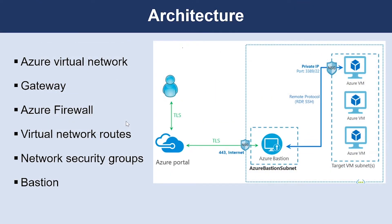Now let us look into the architecture. The architecture consists of the following components. An on-premises network is a private local area network implemented in an organization. An Azure virtual network hosts the application and other resources running in Azure. The gateway provides connectivity between the routers in the on-premises network and the virtual network, and is placed in its own subnet.